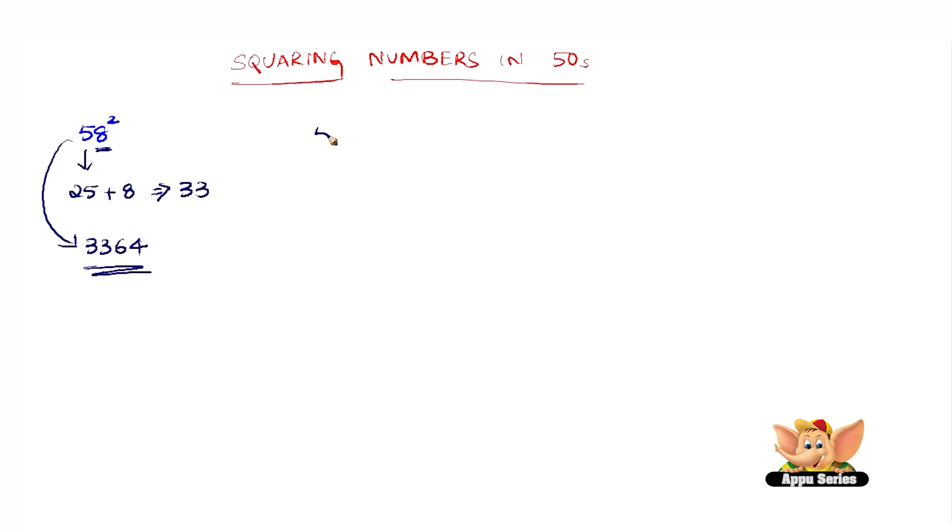Let us take another example that is 54 square. Square of 5 is 25. Add 4 to it we get 29. Now simply join the square of 4 to 29. So we get 29, square of 4 is 16. So 2916 is the square of 54.